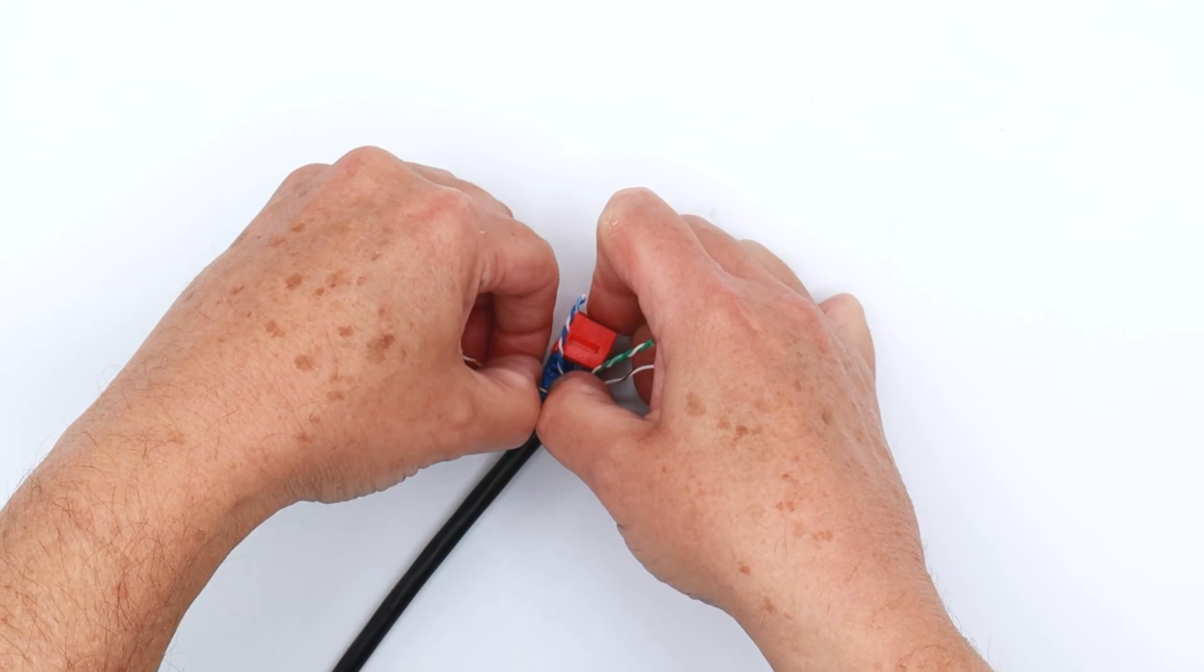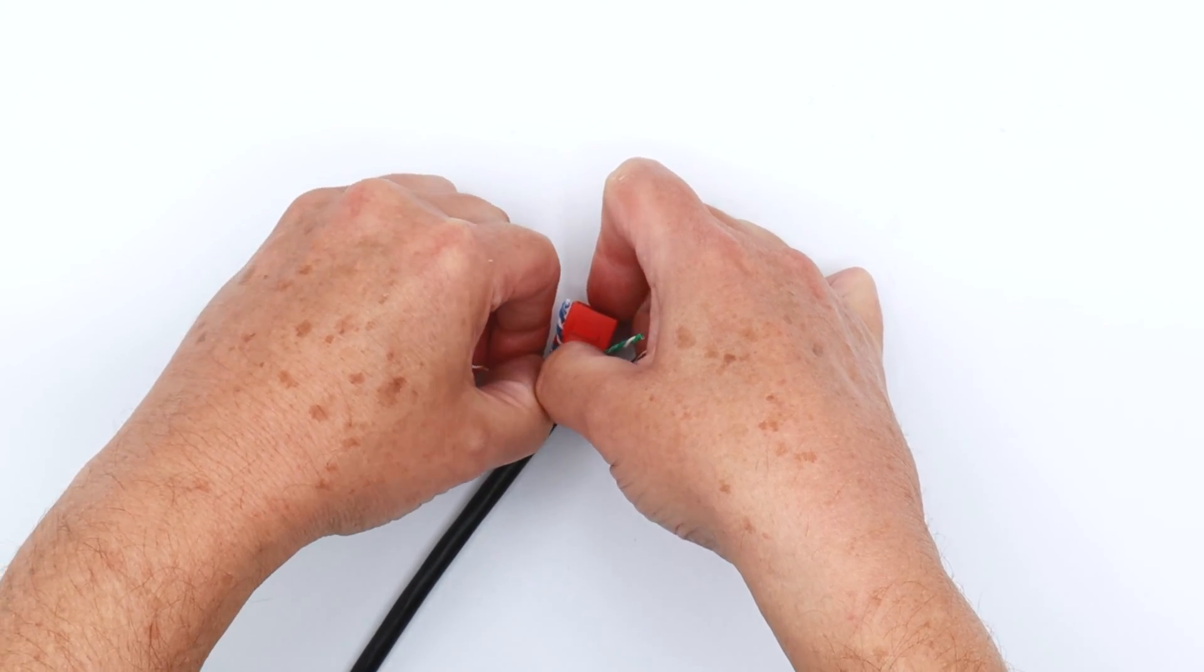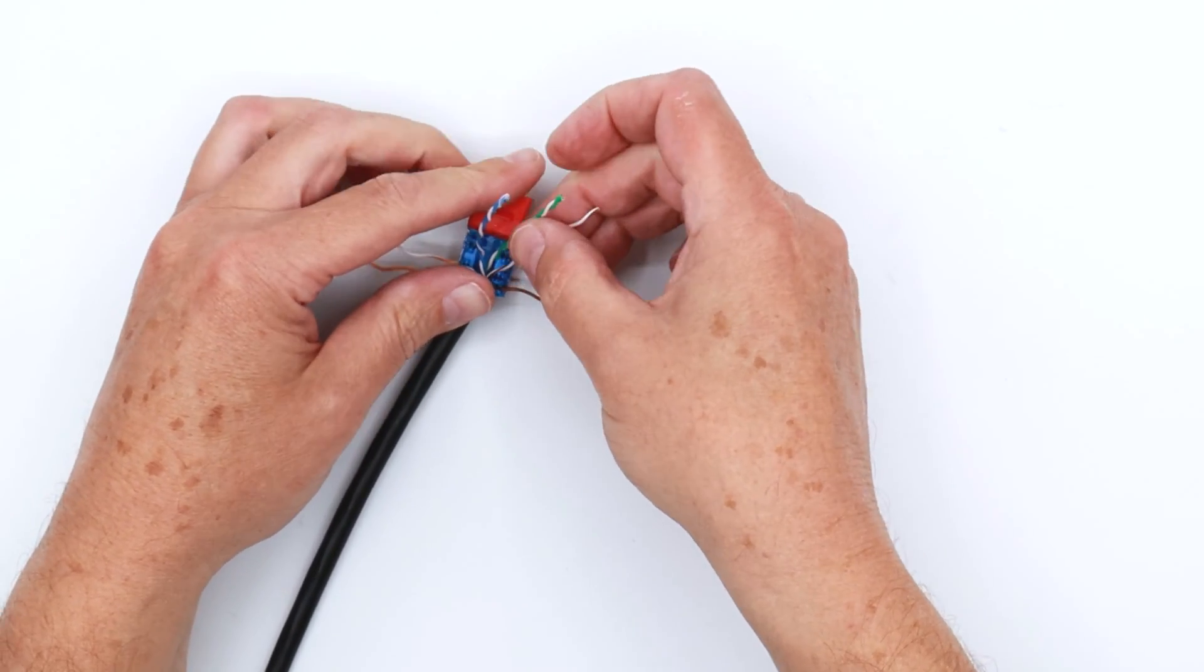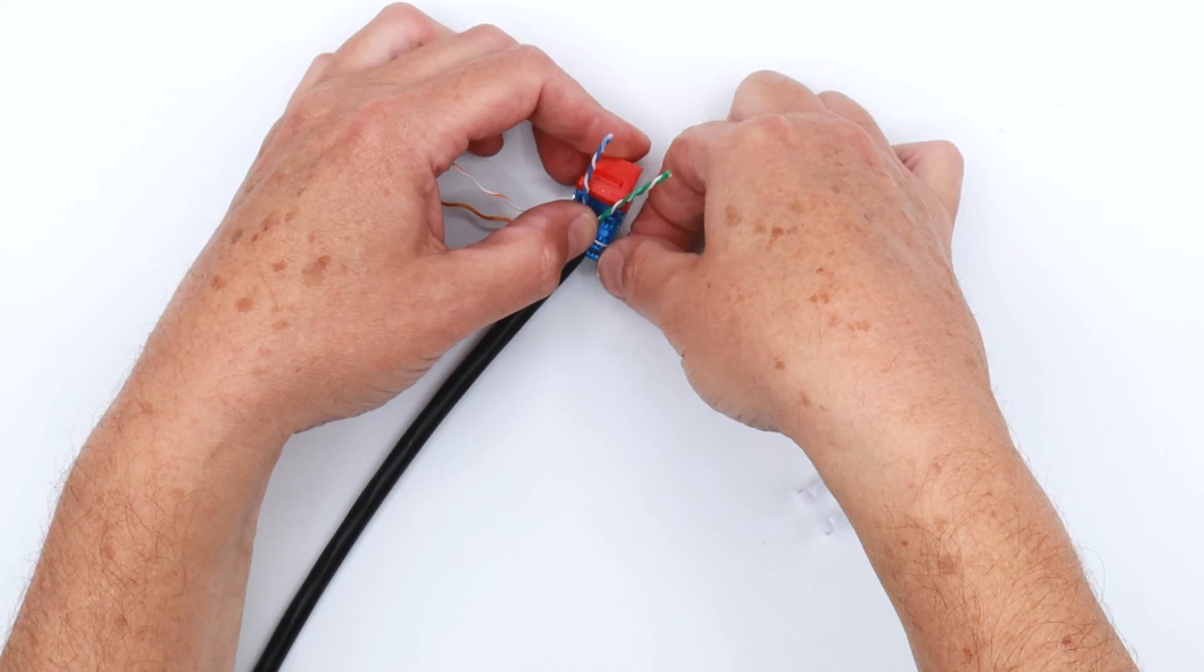And then you can go ahead and seat the rest of the conductors pretty much at your leisure. In the case of the stripe orange pair, or stripe orange wire, just simply put that into the slot. And then you're going to do the same thing with the stripe brown.